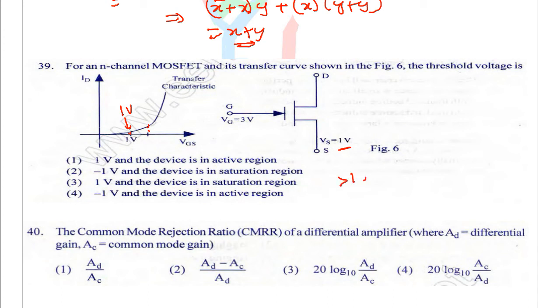If it is greater than 1 volt, we can say it has entered into saturation region. Less than 1 volt means it is in cutoff region. So at 1 volt the device is in active region, and at -1 volt the device is in saturation region. Options 1 and 3 are the right answers.